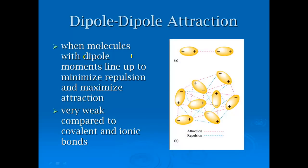A dipole moment is just when something has polarity to it. That's it. For example, this molecule right here is polar. When we have a dipole moment, these molecules line up so that they minimize their repulsion and maximize the attraction. Or in other words, the positives and the negatives line up so that they're kind of opposite from each other. And these are extremely weak compared to covalent and ionic bonds.